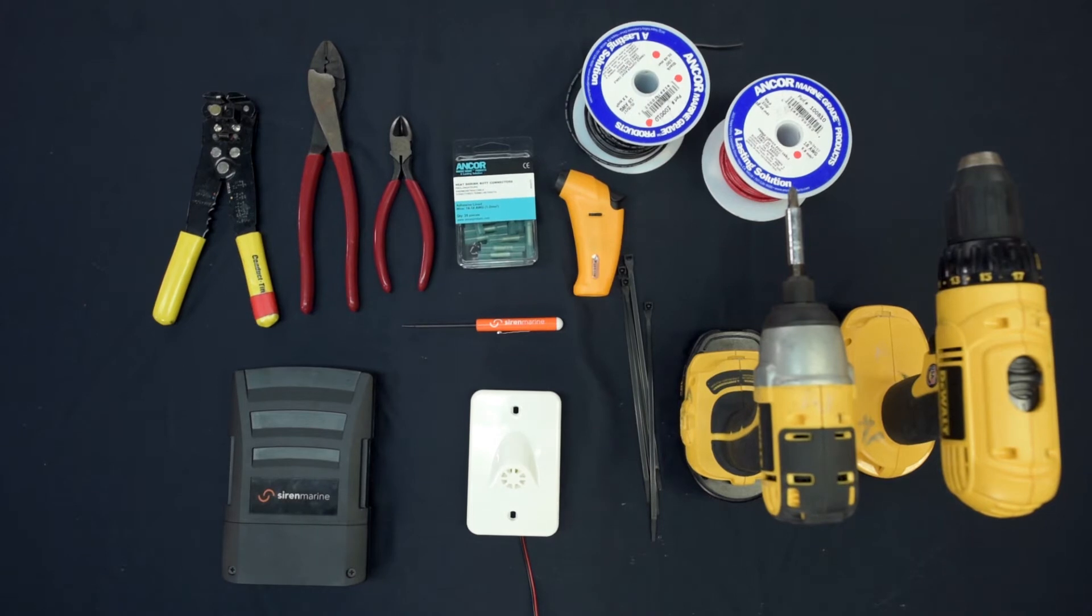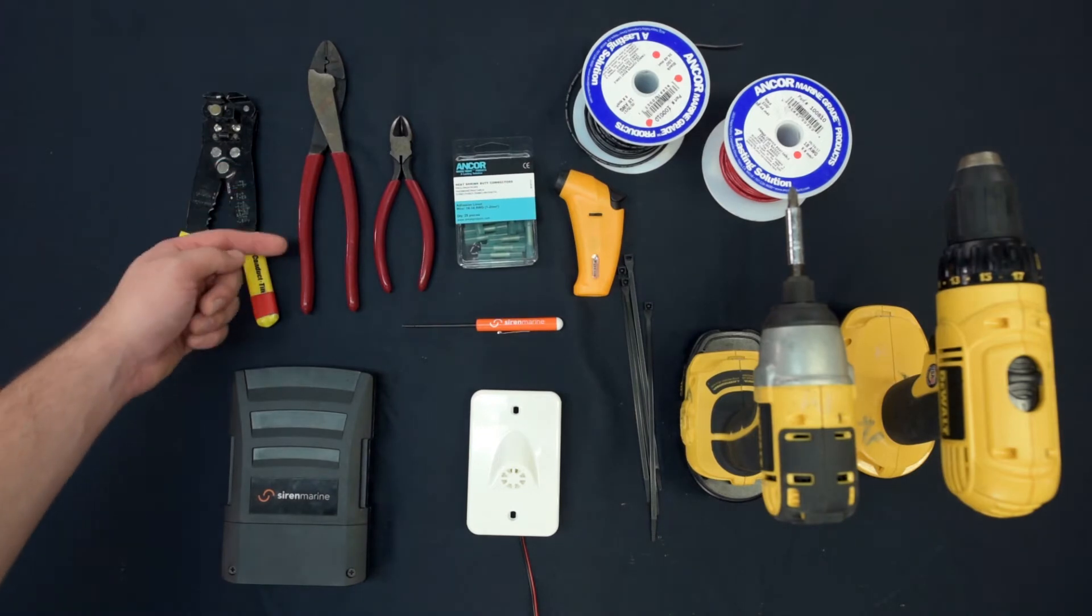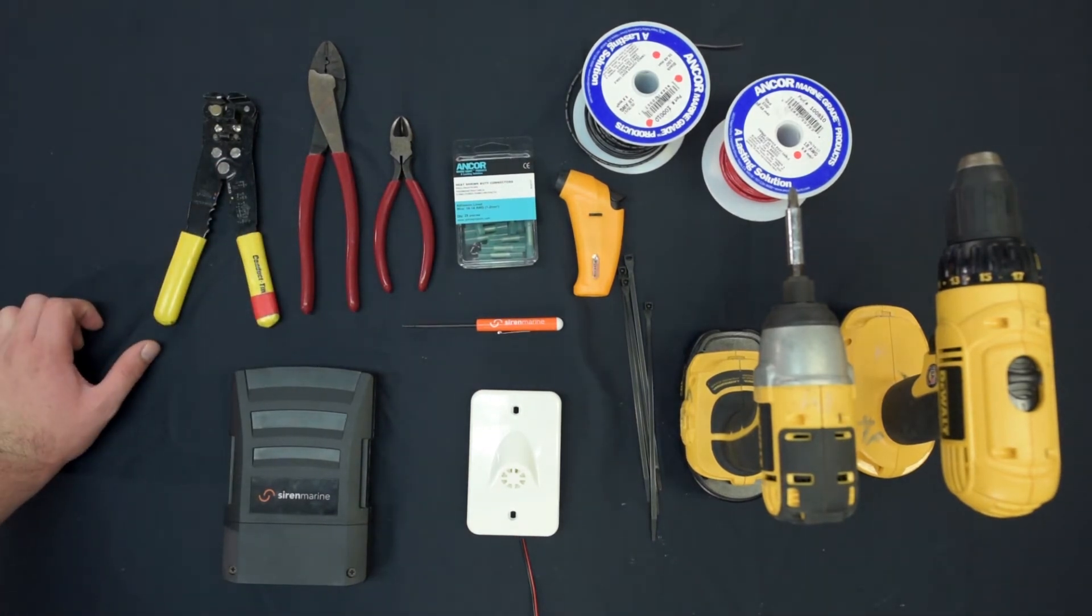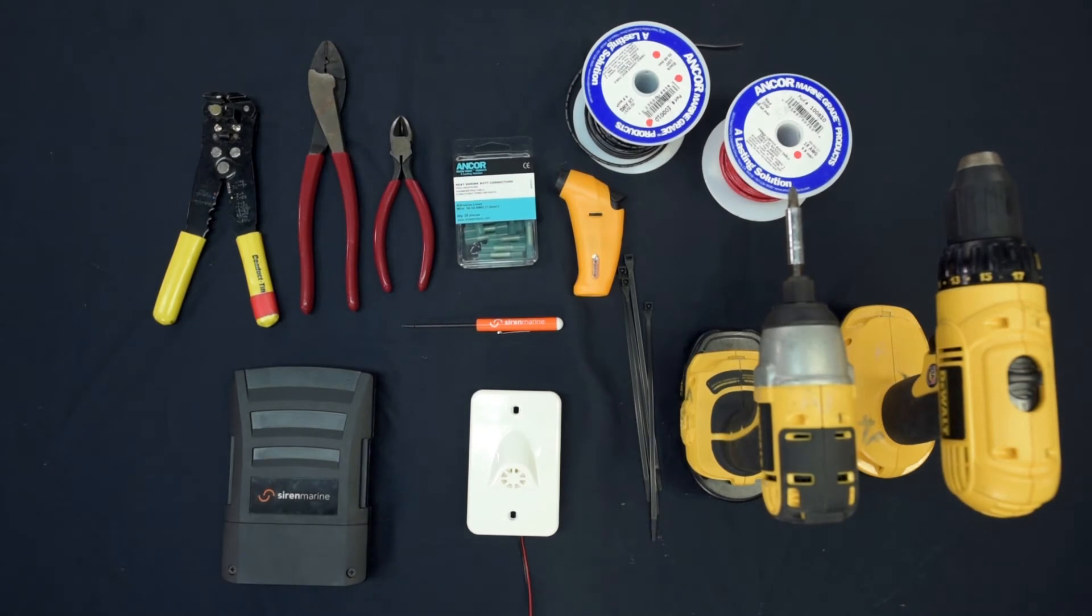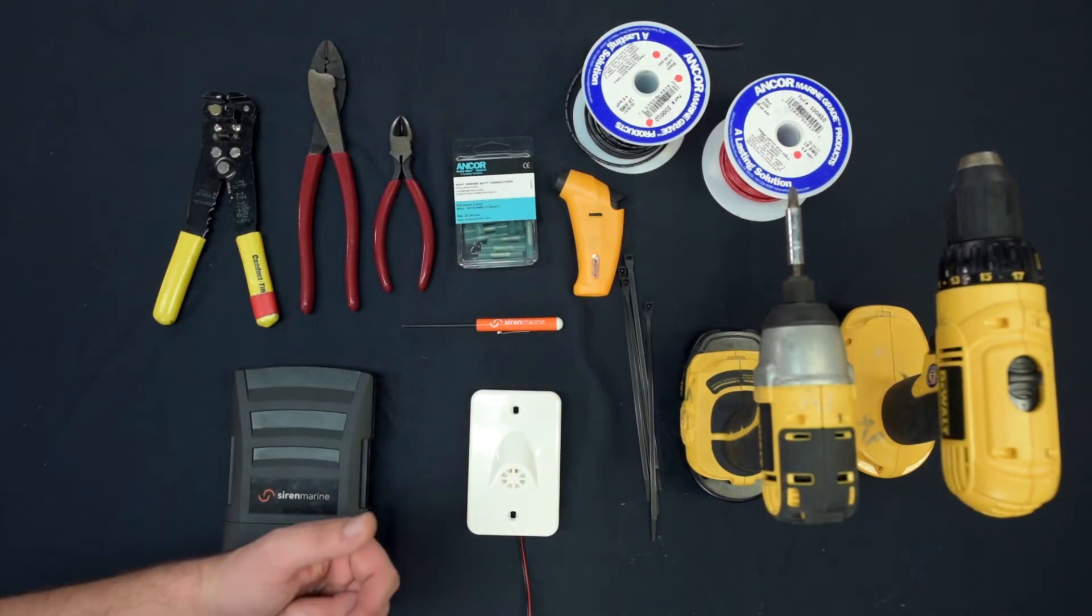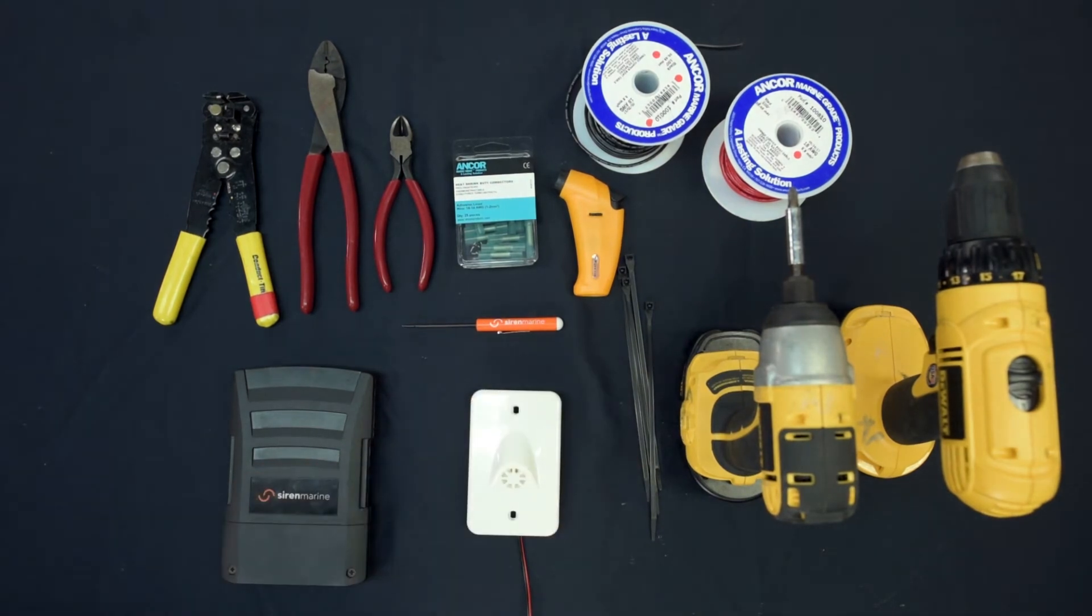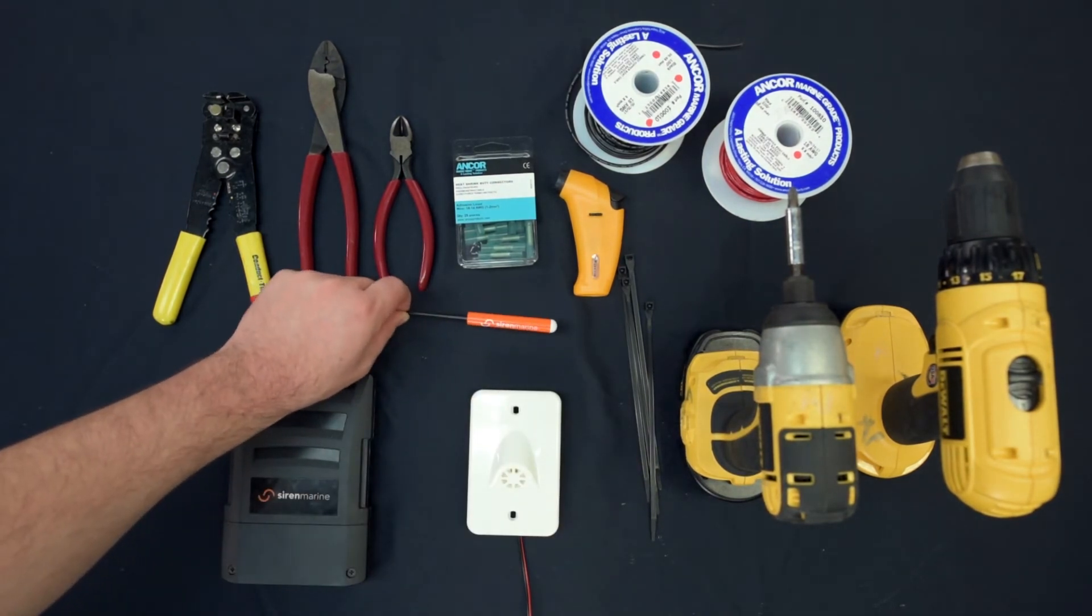All right guys, so laid out in front of us here, we have the tools necessary to connect my audible siren to my output on the MTC unit. From left to right, I have my wire strippers, pair of crimps, dikes, some heat shrink butt connectors in case I have to extend my wire runs from the install of the siren directly to the MTC, a torch to melt those wire butts, and then my drill, some zip ties for the installation process, and our handy Siren Marine screwdriver.